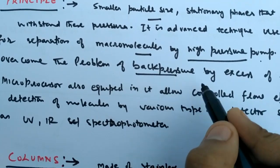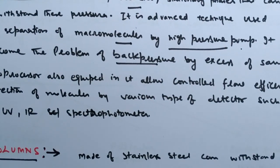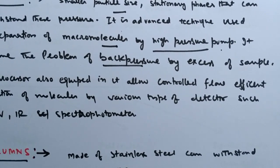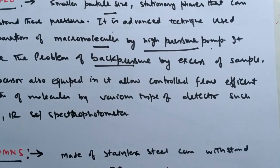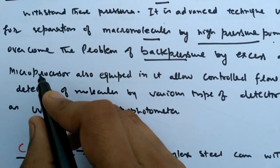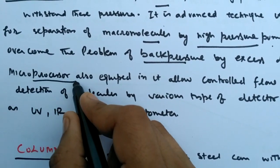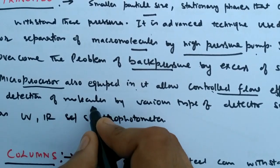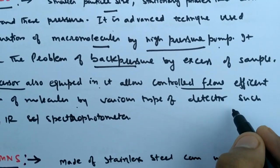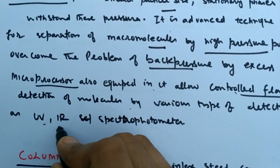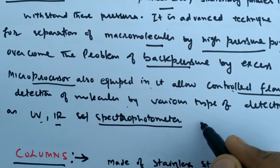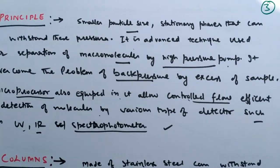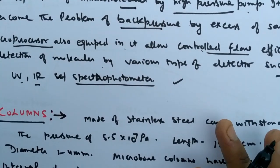It overcomes the problem of back pressure seen in column chromatography, where capillary pores are occupied by excess sample. Microprocessors are also used and they allow controlled flow and efficient detection of molecules by various types of detectors — UV, IR, and spectrophotometers — so it can detect even a single atom or single molecule to be separated.